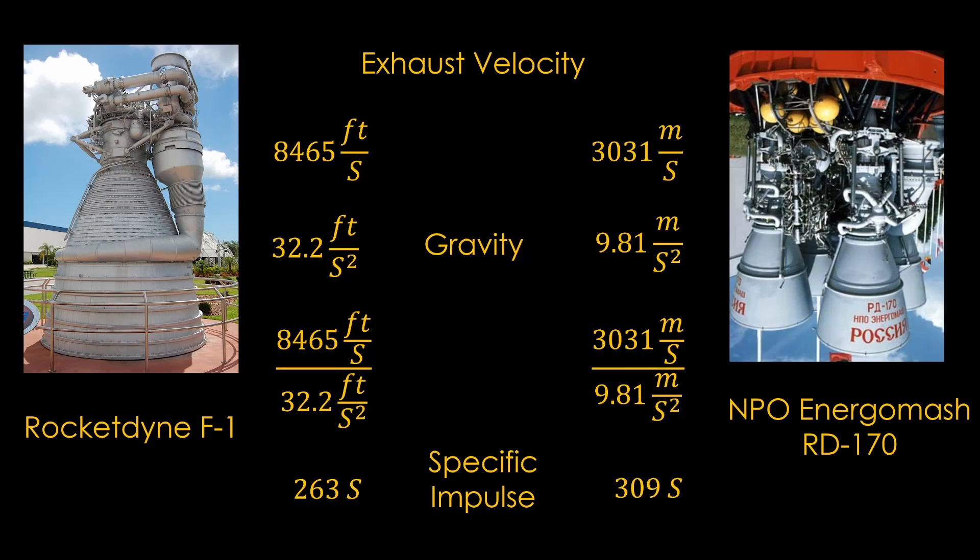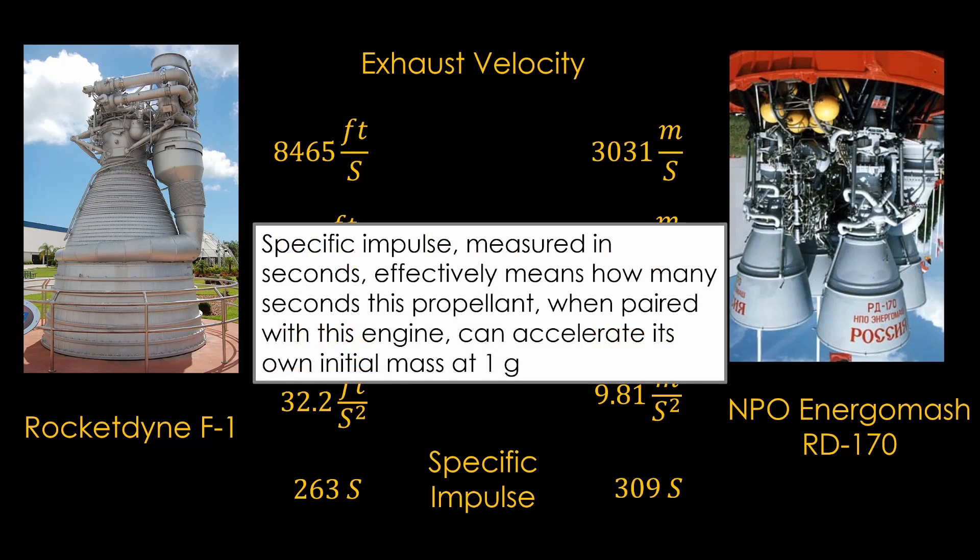You will find some discussions about the seconds in specific impulse meaning something like this. Specific impulse, measured in seconds, effectively means how many seconds this propellant, when paired with this engine, can accelerate its own initial mass at 1g. Yeah, I don't get it either, and all everybody cares about is exhaust velocity, so just remember that specific impulse is a simpler way to compare engines than exhaust velocity, and you'll be fine. If you want to know more about specific impulse, see my video, What's up with specific impulse?